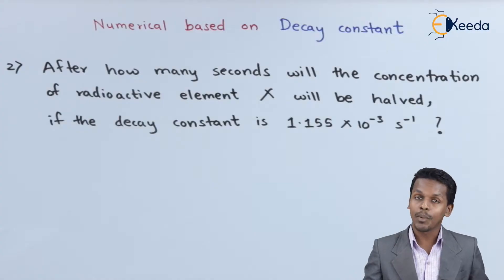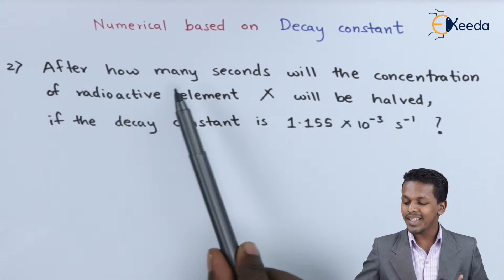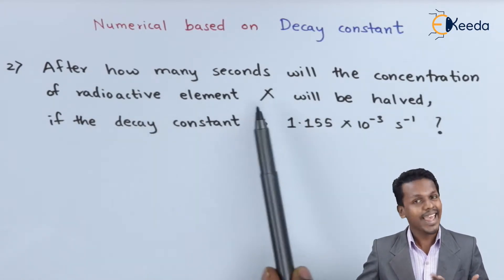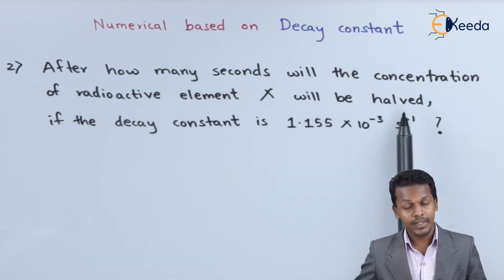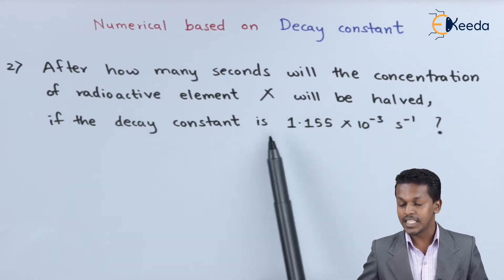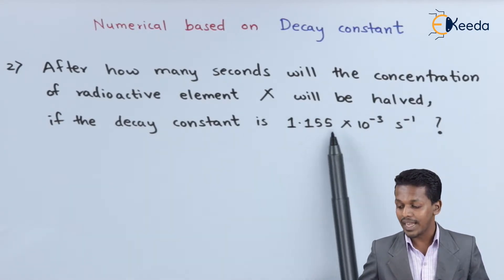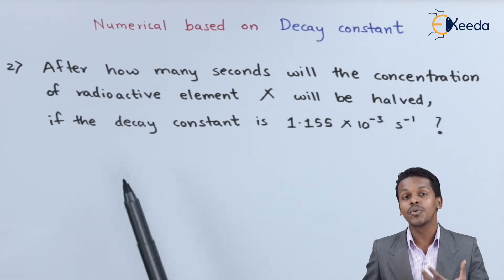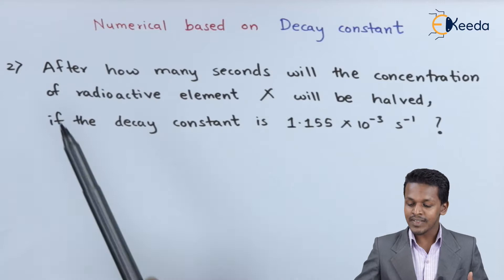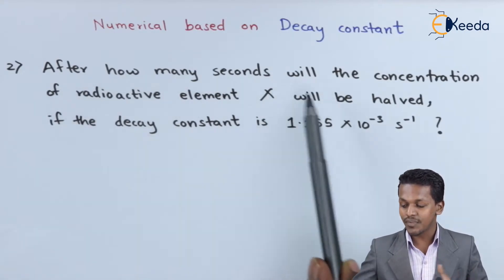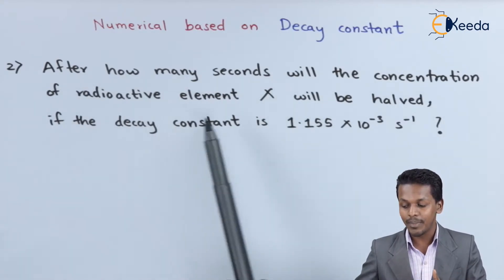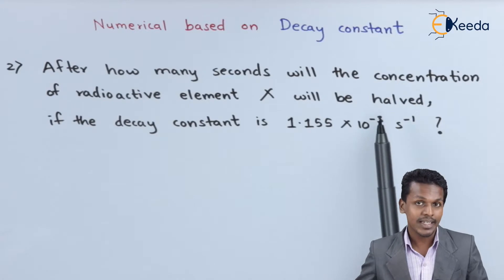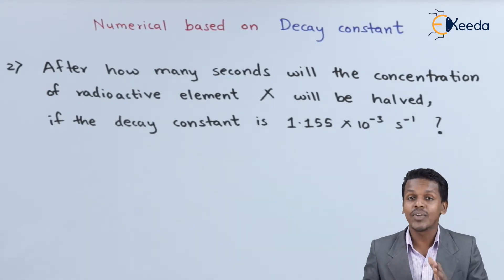Here is the second problem we are going to solve. After how many seconds will the concentration of radioactive element X be halved if the decay constant is 1.155 × 10^-3 s^-1? We have to understand the question. They have asked how many seconds will the concentration be halved, that is the time we need is t_half, the half life.